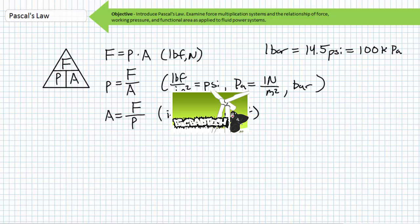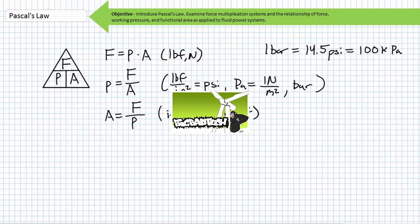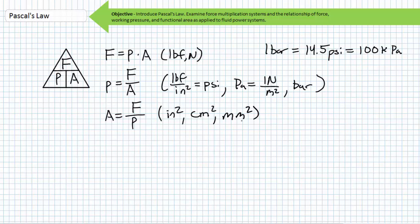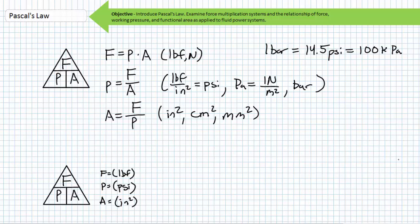As discussed in the hydraulics math lecture at the Big Bad Tech channel, different unit systems necessitate unit conversions, and fluid power systems represent probably the only application where the SI metric system isn't nearly as easy as the US customary system. I'll largely stick to the US customary system for this lecture series. If you stick with units of force as pound force, pressure as PSI, and area as square inches, Pascal's Law needs no unit conversion modifications.